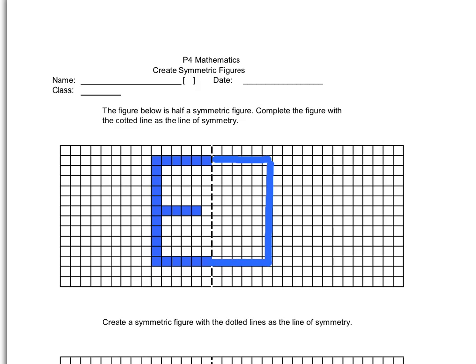And for the middle part, I will leave that one box blank. So I colour all the way here. Yep. So this is my symmetric figure. Completed symmetric figure.